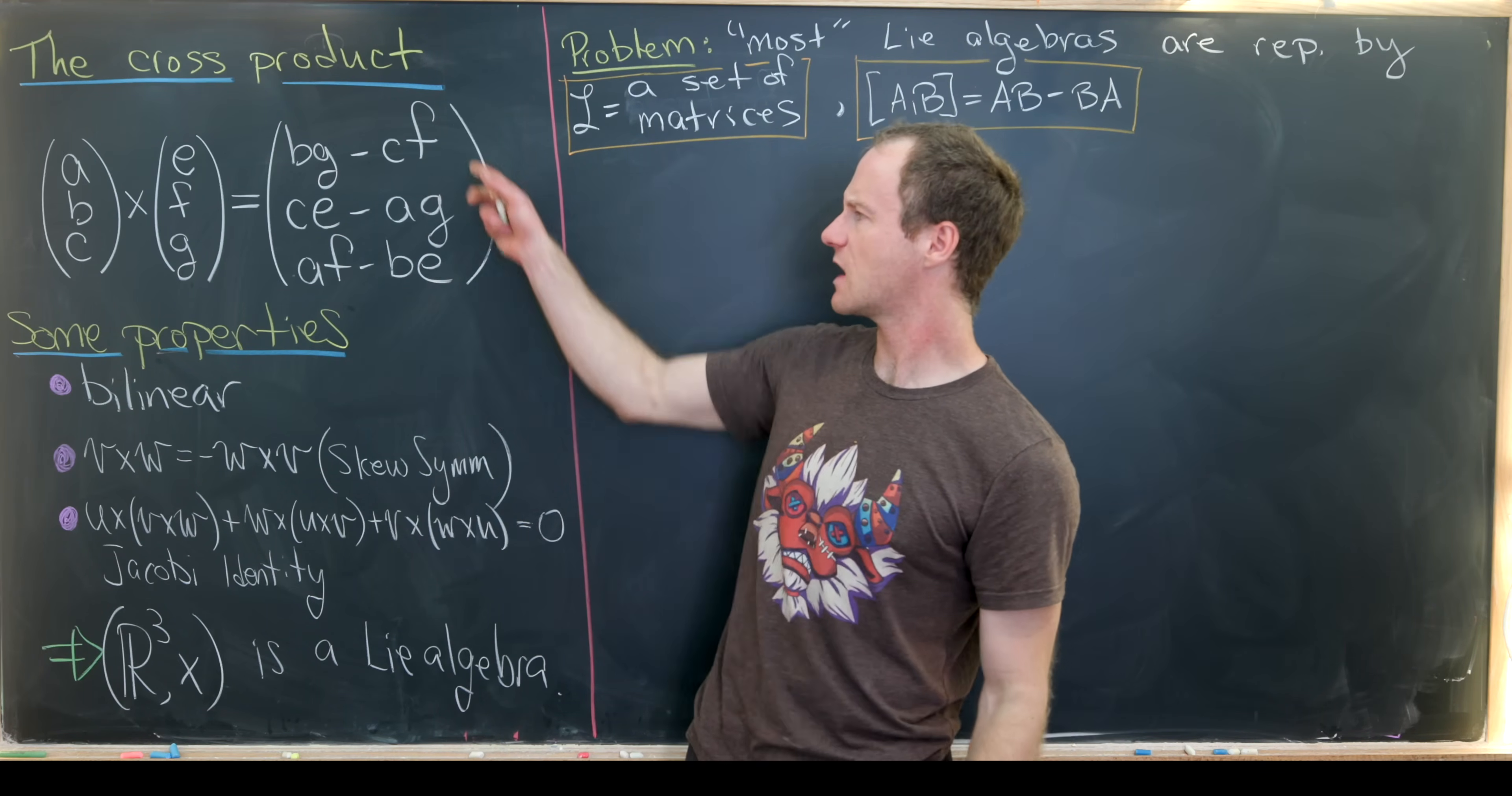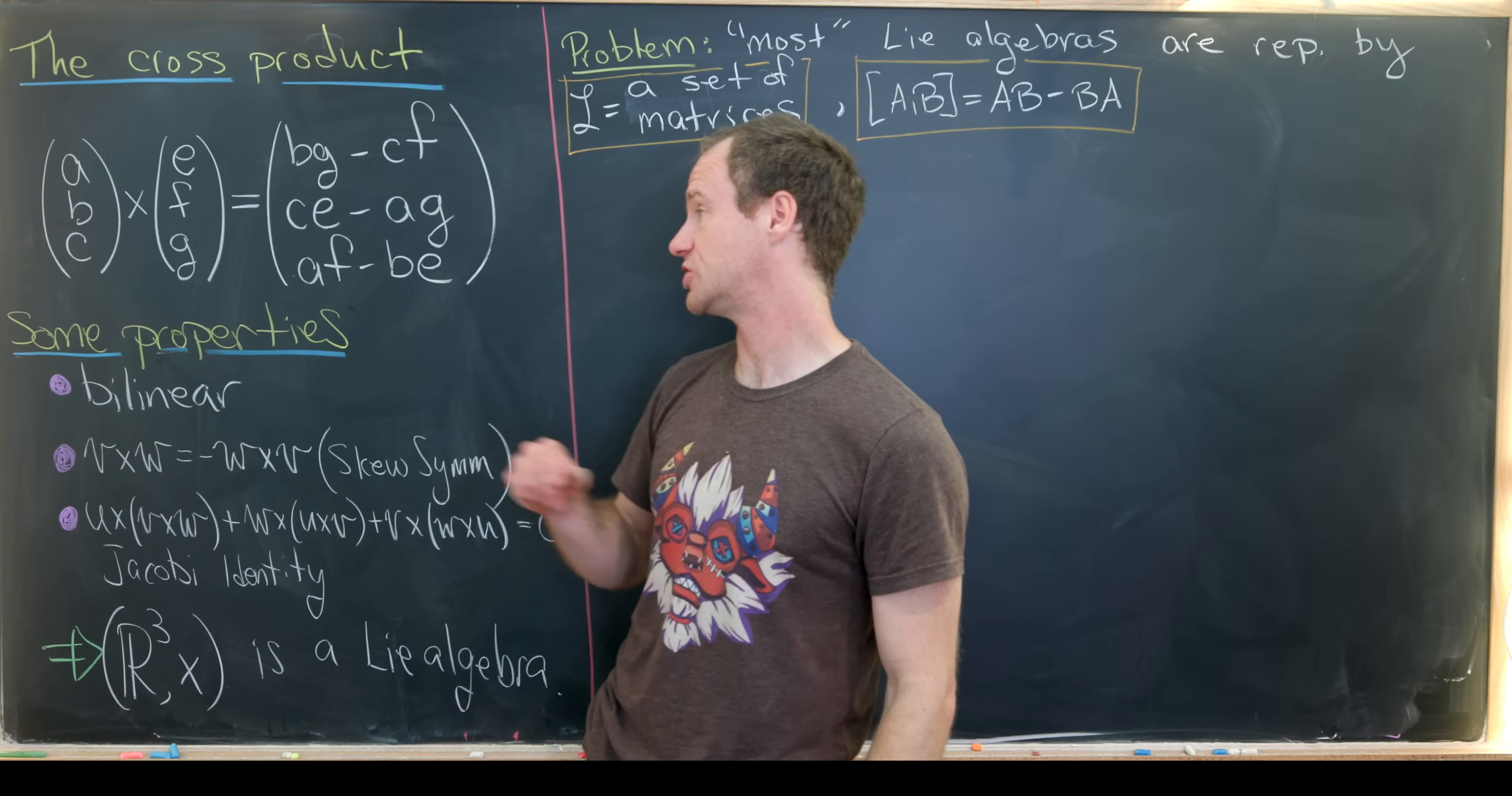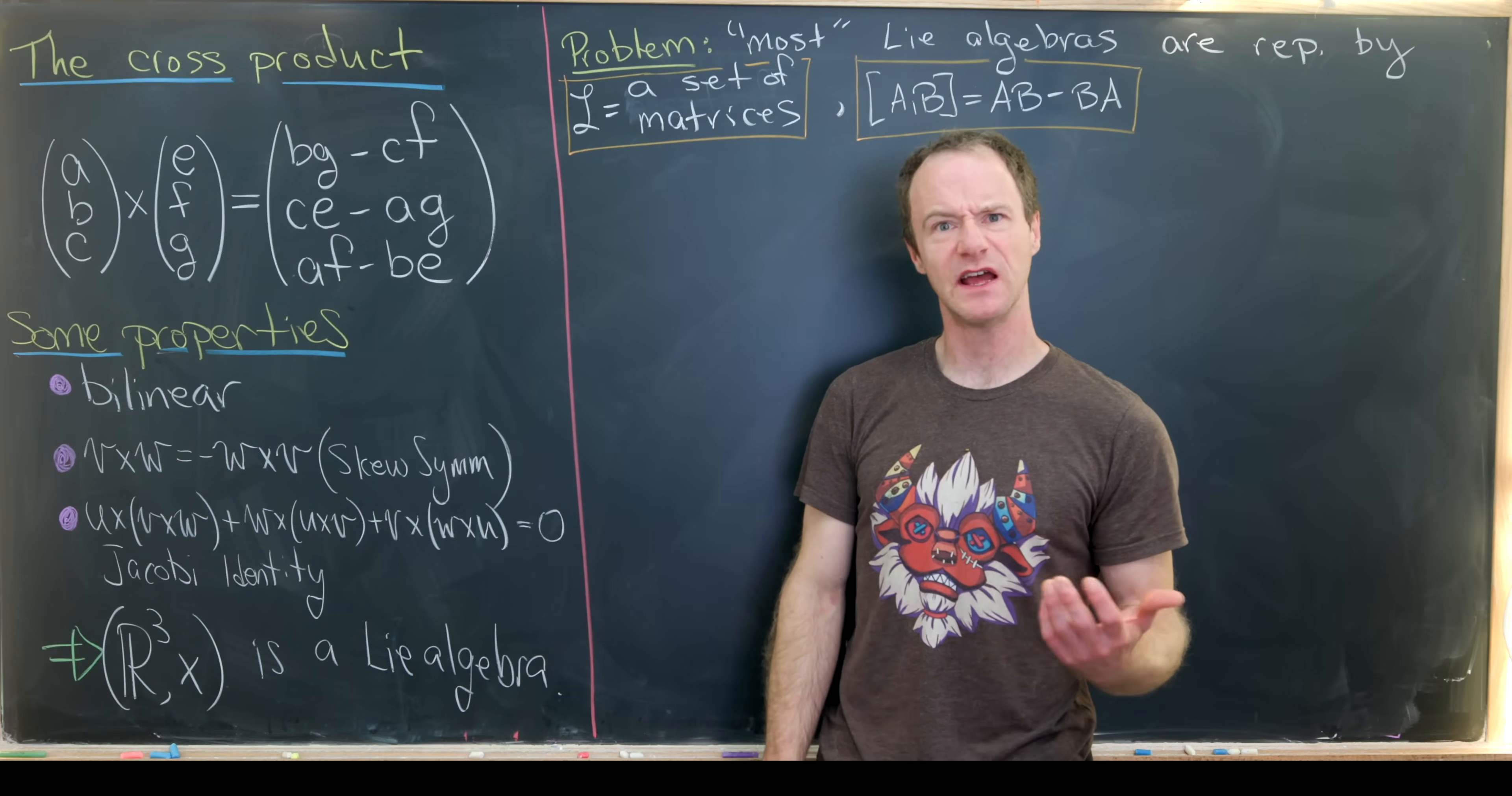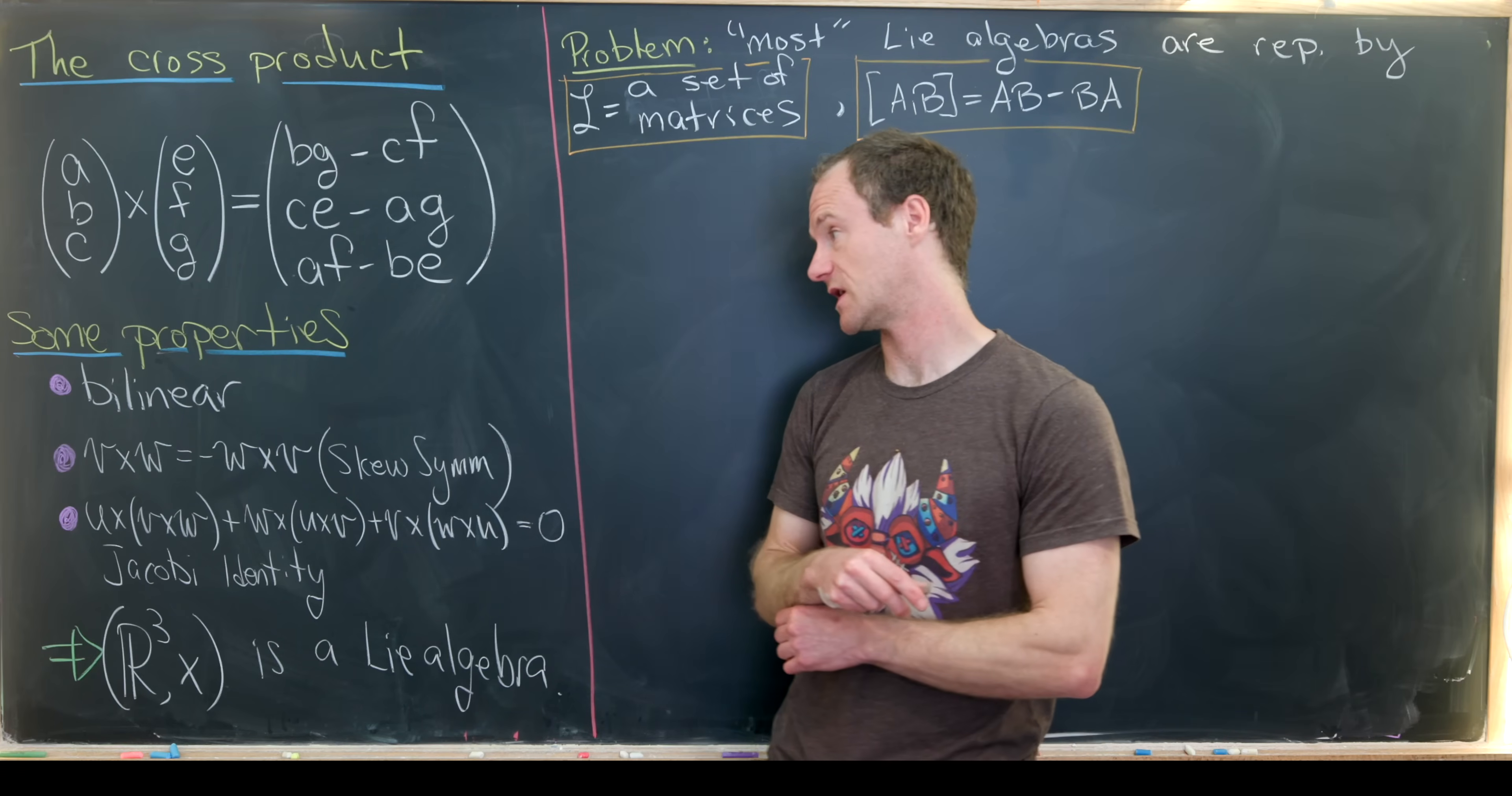And you can come up with these entries just by imposing that condition that this output should be perpendicular to each of these inputs. But we won't do that here. I will review some properties that the cross product has.